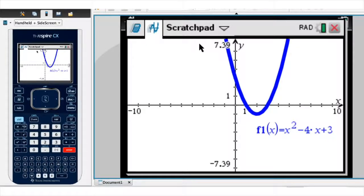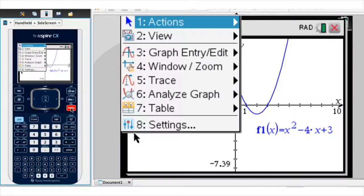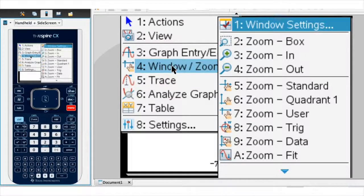But looking at the screen here, we can see that we have a lot of wasted space on the left-hand side as well as at the bottom of the graph. So let me quickly readjust the window settings. For that, I go ahead and click on menu. I then select the fourth option, window slash zoom. And I select the first option, window settings. And I click on it.